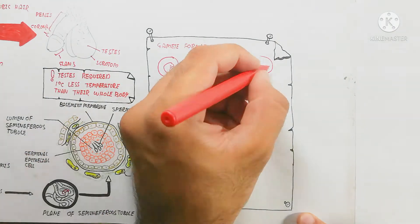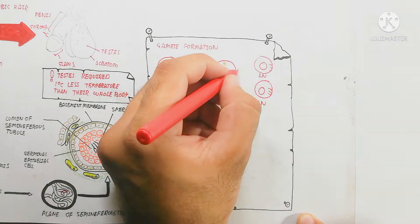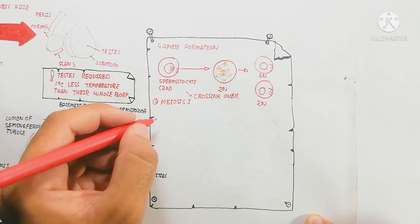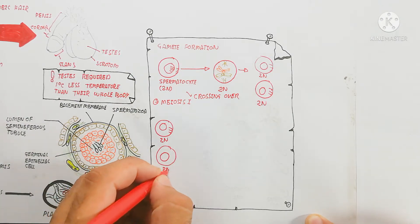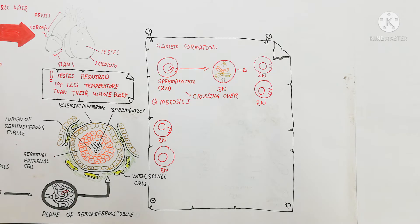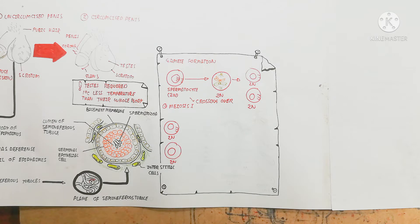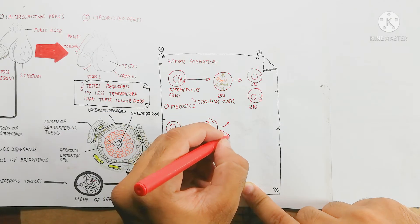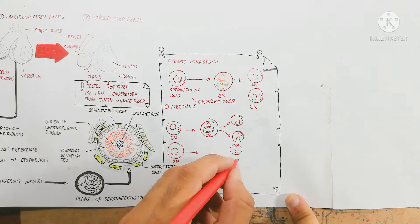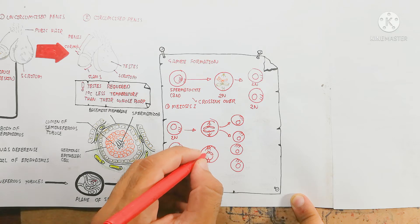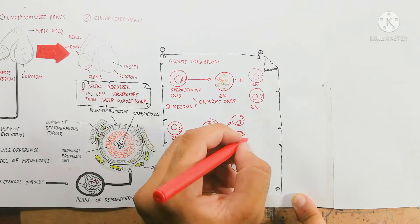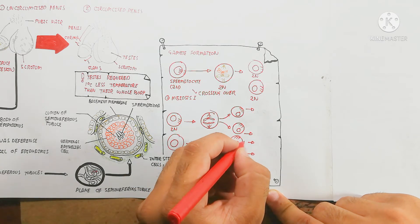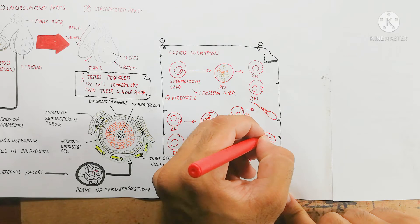The spermatogonia produce spermatocytes by mitotic cell division to become diploid. This diploid undergoes crossing over during cell division, which changes the genetic material to become a diploid spermatocyte — that is the secondary spermatocyte. After meiosis 1 is complete, meiosis 2 begins. The two diploid cells divide further, reducing the chromosome number, so that 23 chromosomes remain in each cell. The secondary spermatocyte becomes a spermatid, which is without a tail, and ultimately moves into the epididymis for maturation.